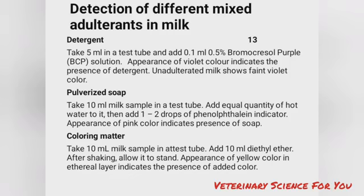Detection of detergent — take 5 ml milk in a test tube and add 0.1 ml of 0.5% bromocresol purple (BCP) solution. Appearance of violet color indicates the presence of detergent; unadulterated milk shows only a faint violet color. Detection of pulverized soap — take 10 ml milk sample, add equal quantity of hot water, then add 1–2 drops of phenolphthalein indicator. Appearance of pink color indicates presence of soap.